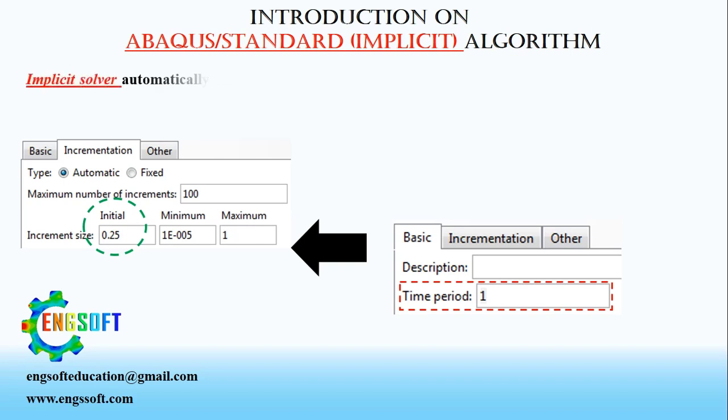Implicit solver automatically adjusts the size of the load increments so that it solves nonlinear problems easily and efficiently. Thus, you only need to suggest the size of the first increment in each step of your simulation.